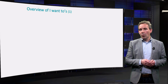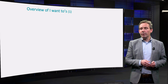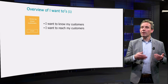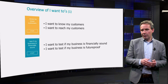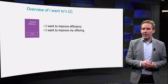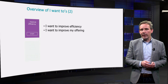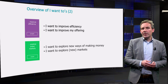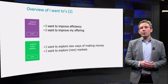So what other 'I want to's are there? We started with mentioning four main 'I want to's as typical entrepreneur objectives, however we found many more from extensive case studies. For example, about customers: I want to know my customers, and I want to reach my customers. And about testing your ideas: test if my business is financially sound, and test if my business is future-proof. Or 'I want to's about improving your business: I want to improve efficiency of my business, and I want to improve my offering. And there are 'I want to's about exploring: explore new ways of making money, or I want to explore new markets. One more 'I want to' is: I want to stay in business. As we showed in the case of ZoDichtBij, these 'I want to's can be grouped to form a business model innovation path.